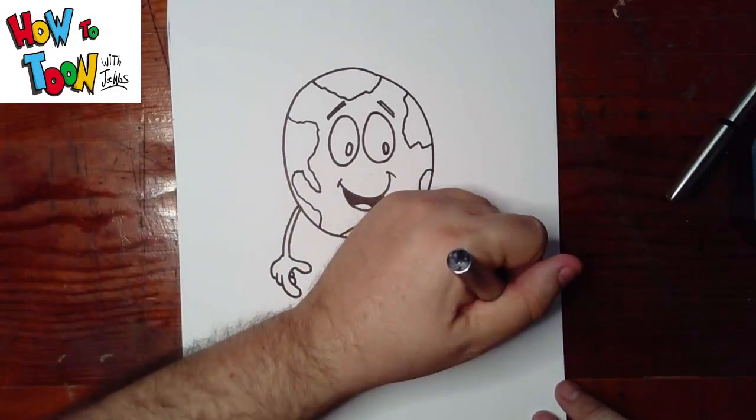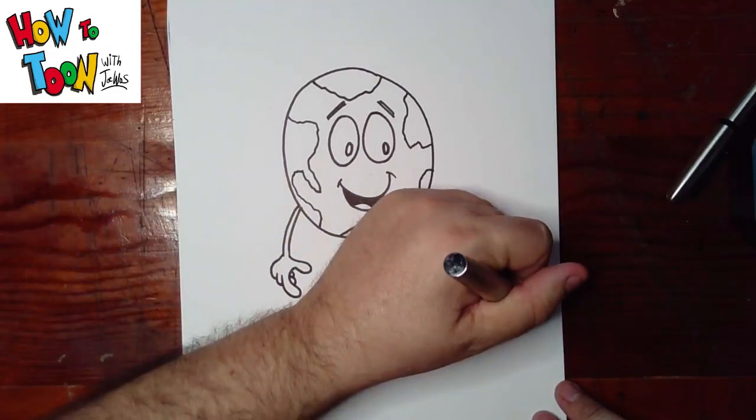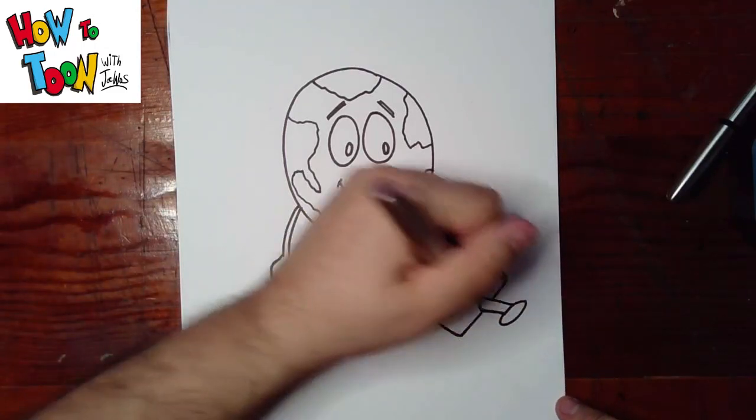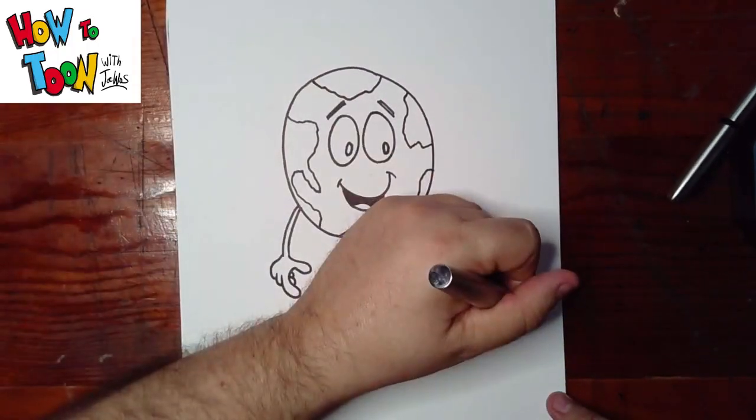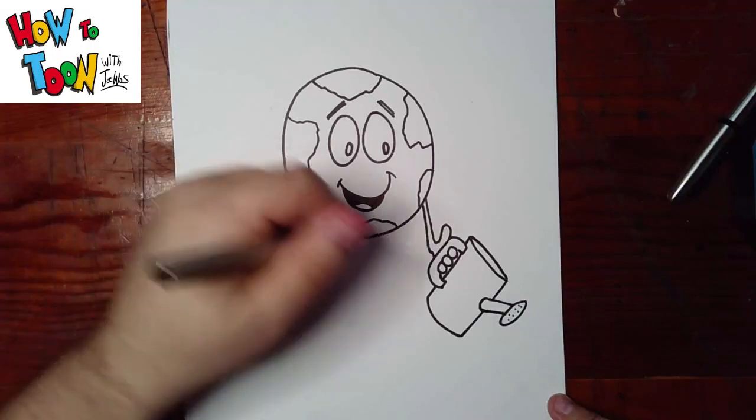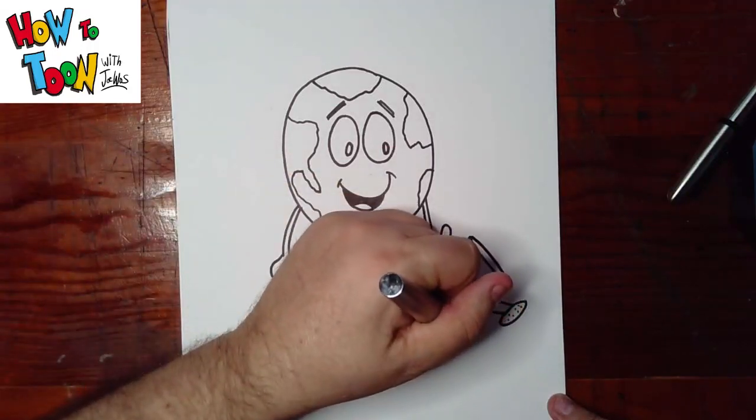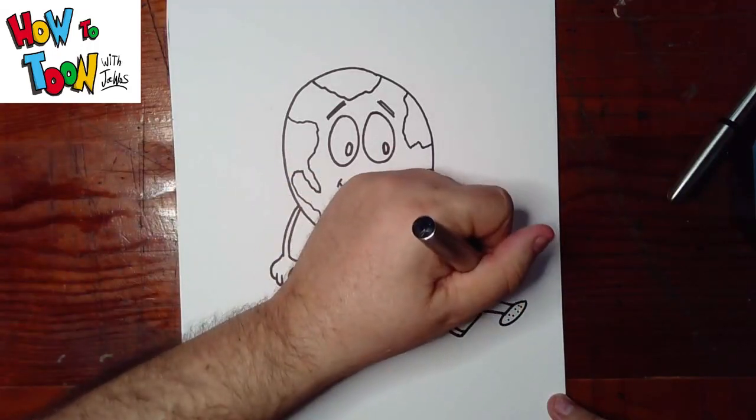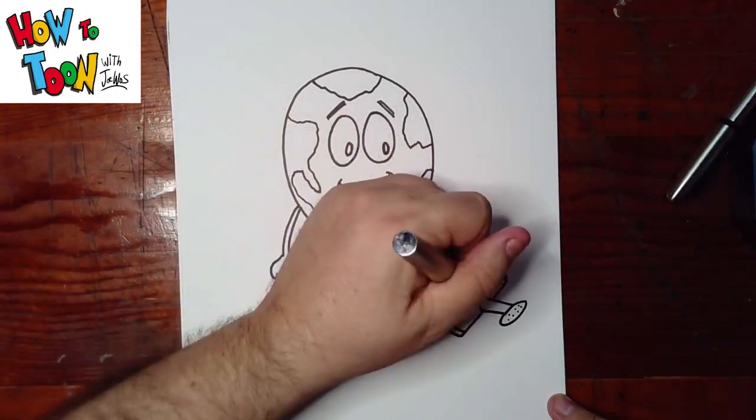A little nozzle. A couple of dots like that. Okay, now a little design on here. Just a line across, line across, and then maybe a flower.